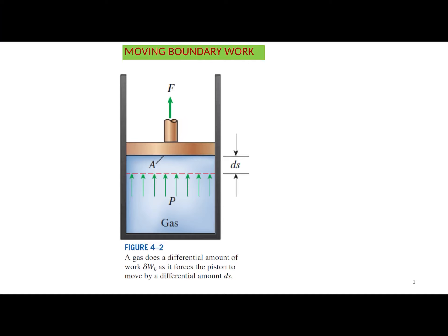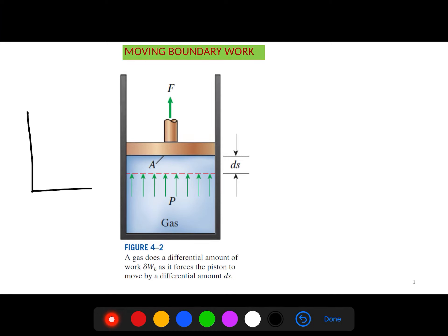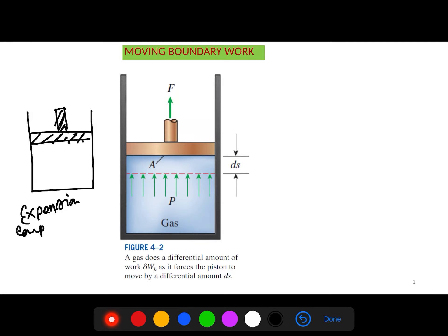In this video I will discuss moving boundary work. In real life we are familiar with different types of mechanical work. Consider a piston-cylinder device, like in an automobile engine. In a piston-cylinder device, during the process, two things happen: expansion and compression. The piston goes down and goes up — this is the expansion and compression.